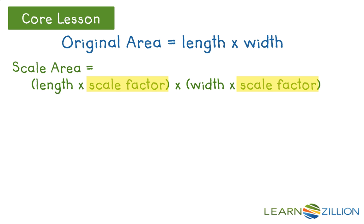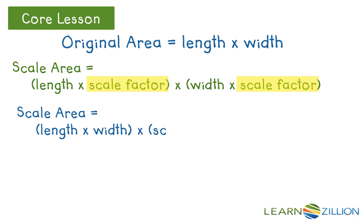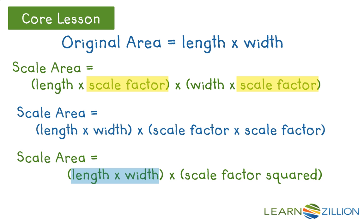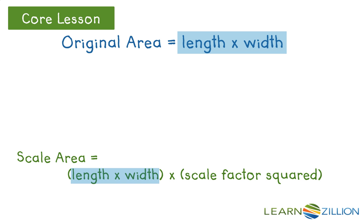Using the commutative property of multiplication, we can rewrite this equation changing the order to group the like terms. So now we have scaled area equals length times width times scale factor times scale factor. We can rewrite that as length times width times scale factor squared, because there are two of the same factor. Notice the first part of this equation is the formula for the original area. So we can conclude that we can take the area of the original figure and multiply it times the scale factor squared. Scaled area equals length times width times scale factor squared.